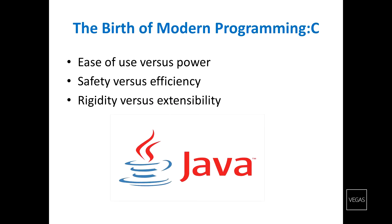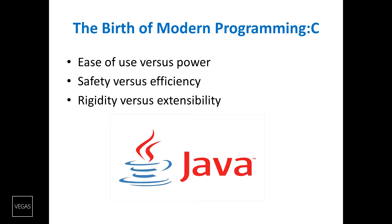Now we'll come to the birth of modern programming — that is, C. You might wonder why, in a Java tutorial, I am speaking about C. The C language shook the computer world and should not be underestimated, because it fundamentally changed the way programming was approached and thought about. The creation of C was a direct result of the need for a structured, efficient, high-level language that could replace assembly code when creating system programs. When a computer language is designed, trade-offs are often made — ease of use versus power, safety versus efficiency, and rigidity versus extensibility.